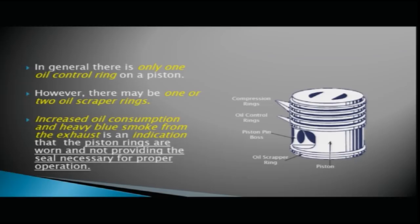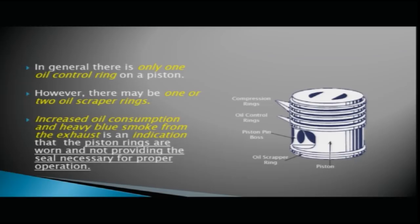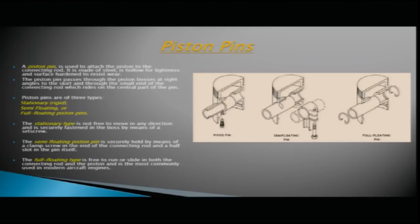Coming to piston pins: a piston pin is used to attach the piston to the connecting rod. It is made of steel, hollow for lightness, and surface hardened to resist wear. The piston pin passes through the piston bosses at right angles to the skirt and through the small end of the connecting rod, which rides on the central part of the pin.